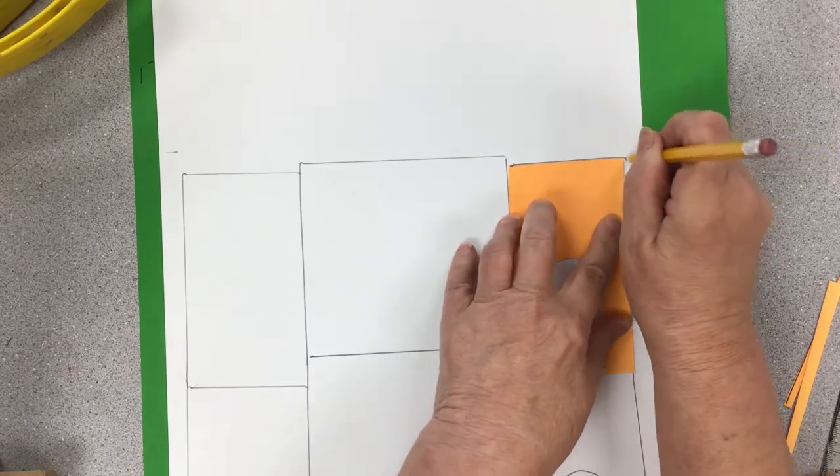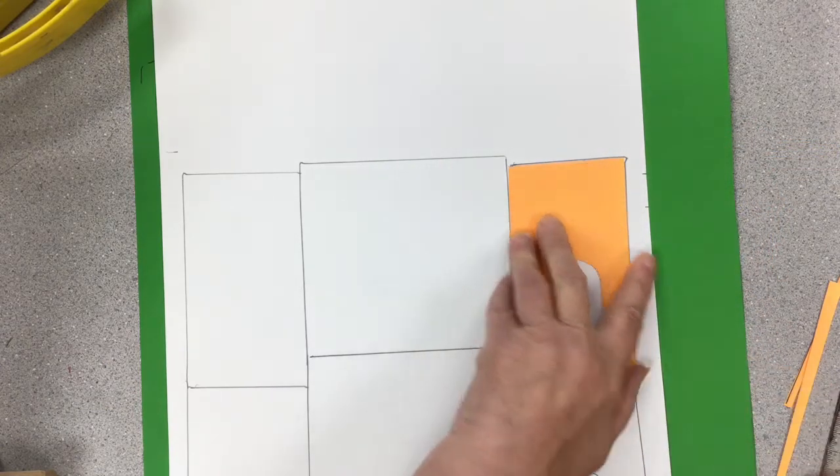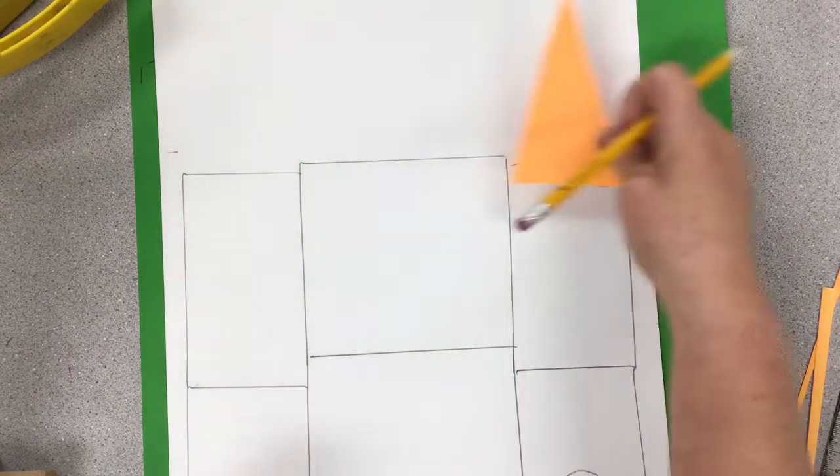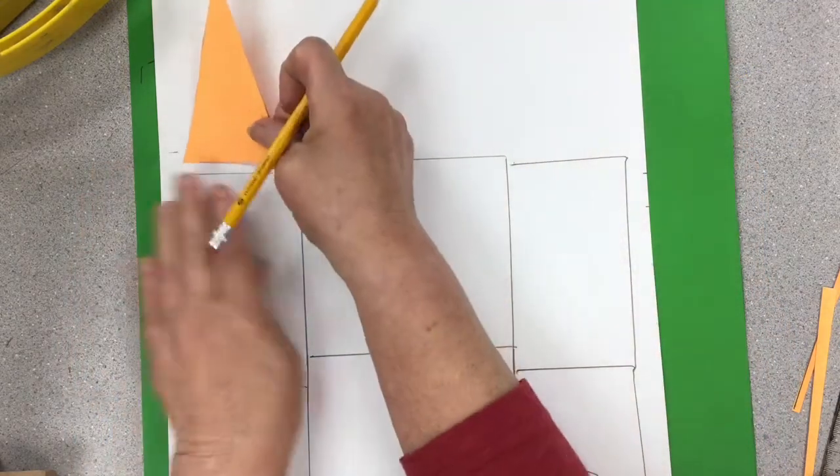I came down a little bit because I wanted to be sure I was going to have enough room for my two towers, and I think I'll do two towers, and then maybe a high steeple in the middle.